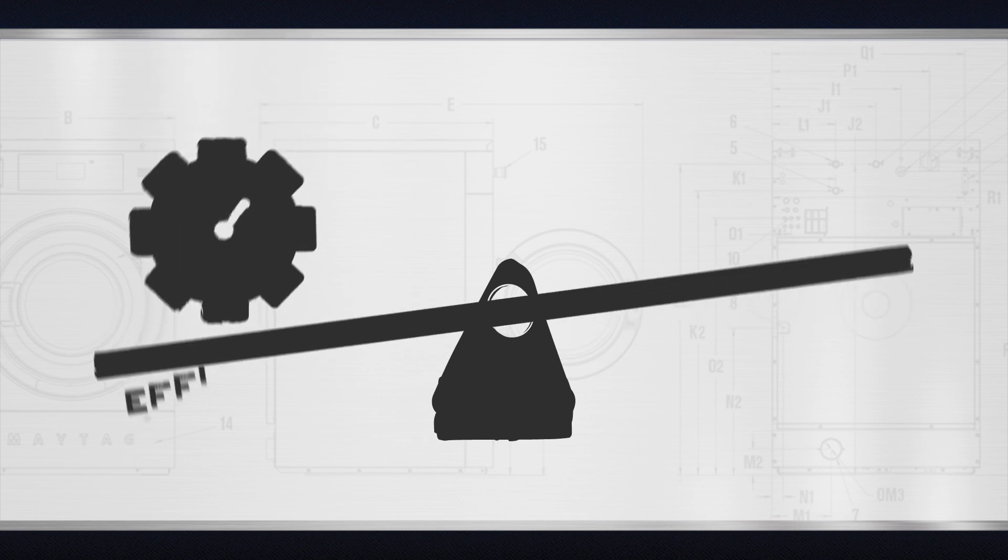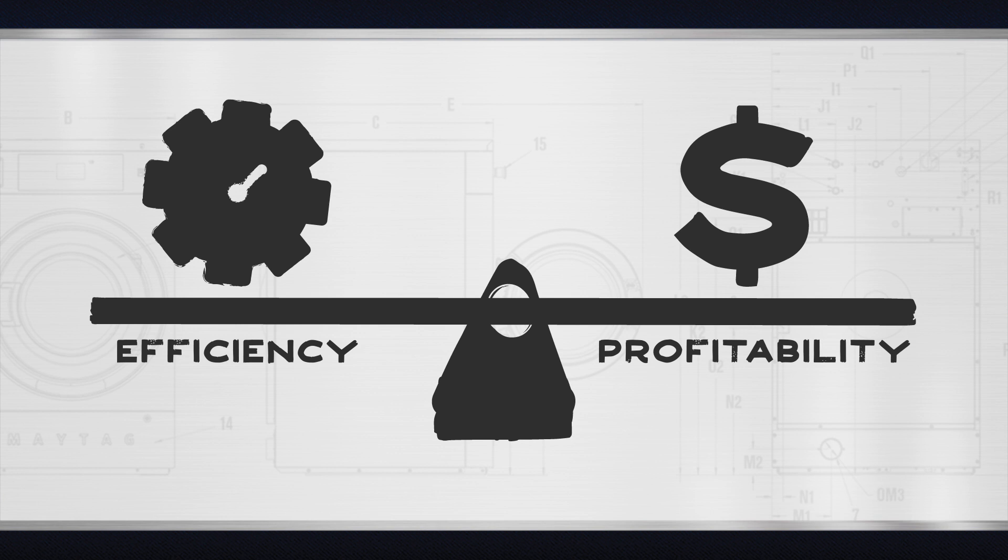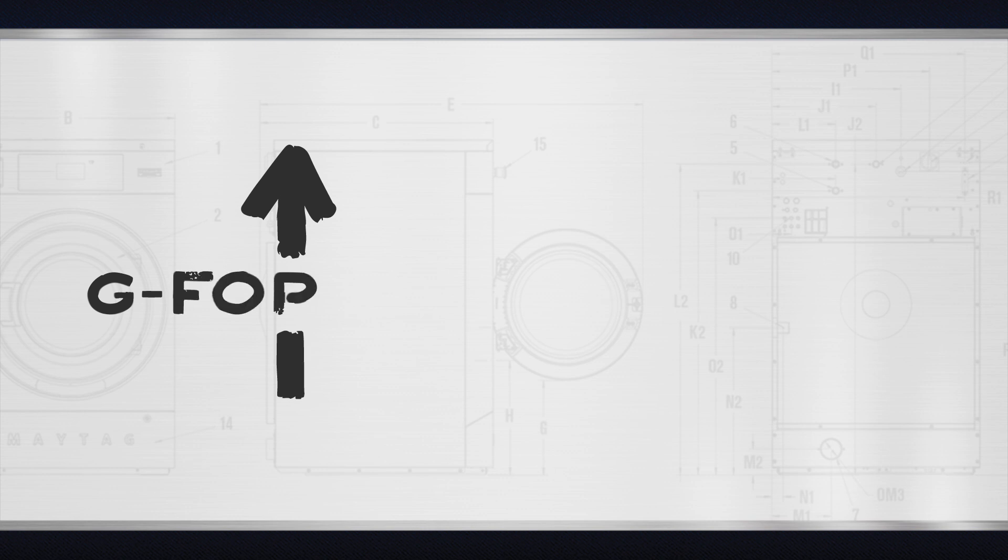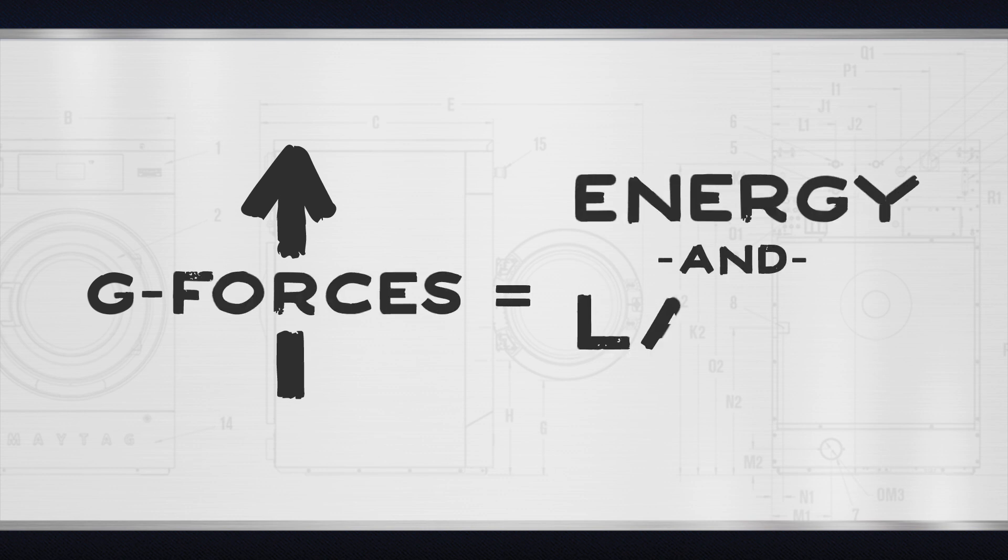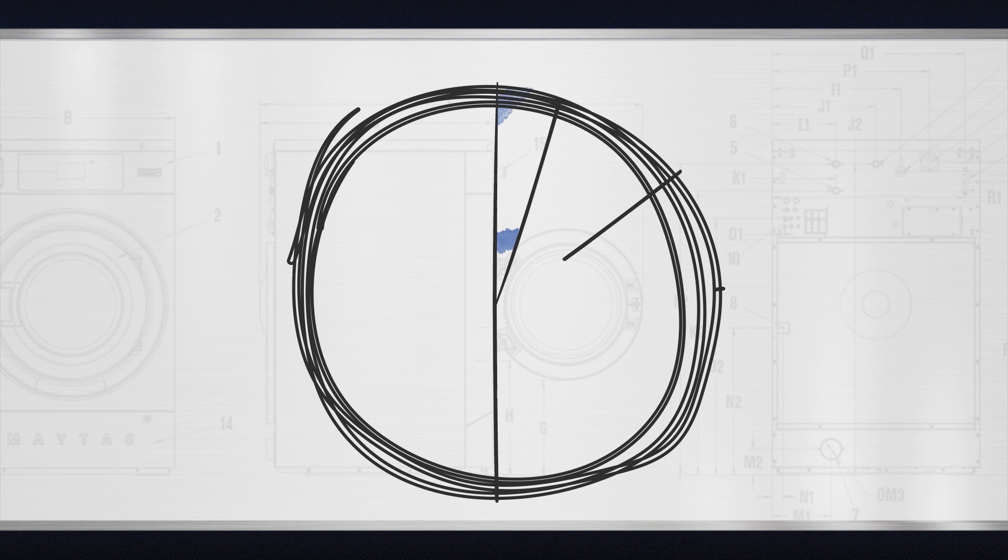Every segment of your business is measured for efficiency and profitability, and in the on-premises laundry industry, utilities and labor costs are usually the largest expenses. At Maytag Commercial Laundry, we understand. We're going to show you how using washers with higher g-forces translates into significant energy and labor savings.